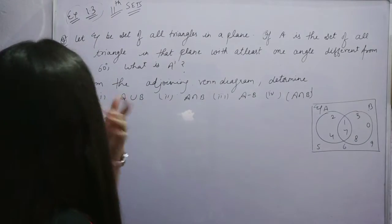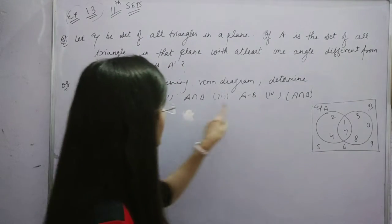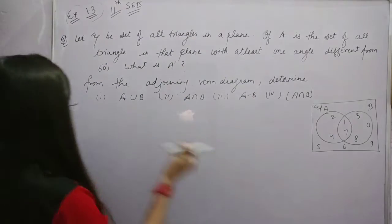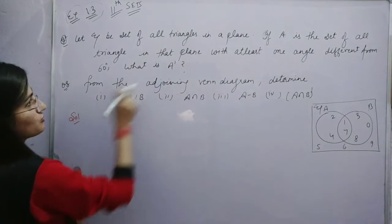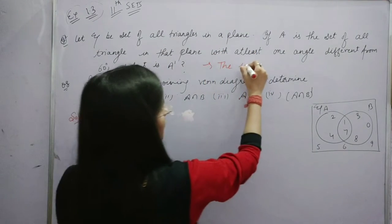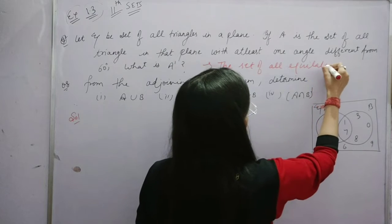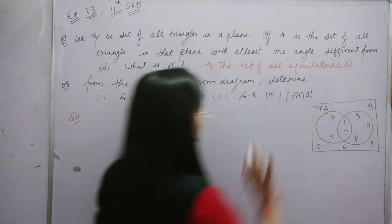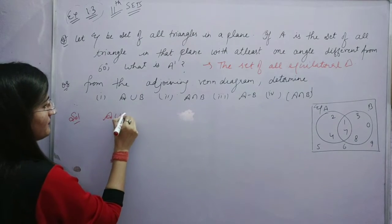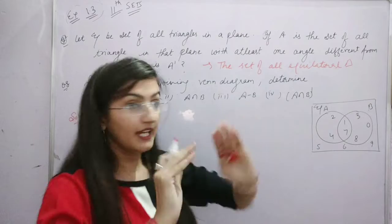Clear? Now see the eighth part — from that one, a Venn diagram. We've given these four parts with answers. Let's see. It's the set of all equilateral triangles. Now the first part: we have to find A union B with this Venn diagram.